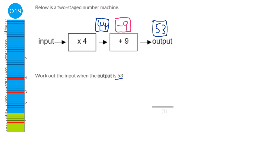The next operation says times 4, so the opposite is divide by 4. We do 44 divided by 4, which gives an input of 11. Let's check the whole thing: put in 11, 11 times 4 is 44, 44 plus 9 is 53. So we know we've got it correct.